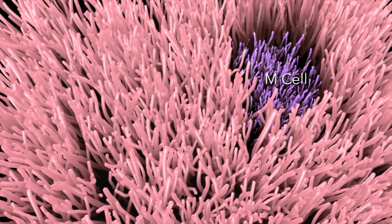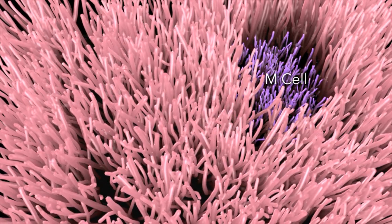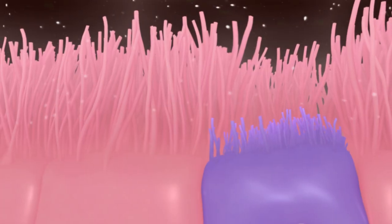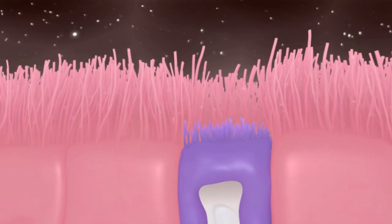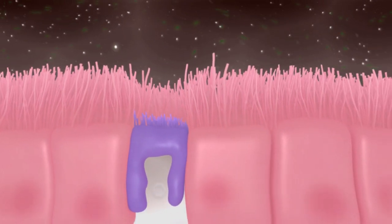M-cells have unique morphological features, including an irregular brush border, reduced microvilli, and a reduced overlying glycocalyx. These cells sample the contents from the intestinal lumen, and present possible antigens to the underlying immune cells to instruct host immunity.